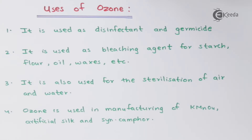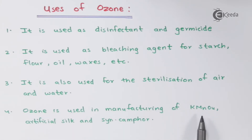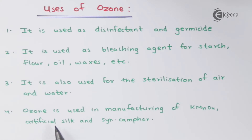Ozone is used in the manufacturing of KMnO4, that is potassium permanganate. Along with that, it is also used in the preparation of artificial silk and synthetic camphor. So these are certain industrial uses that I have discussed about here.